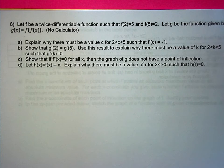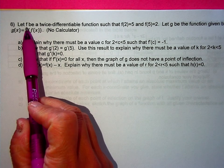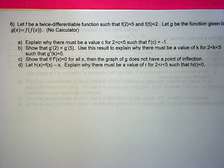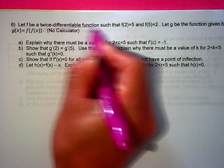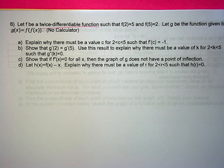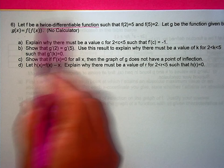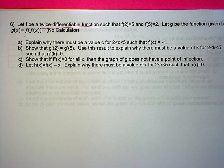Reading through the stem of the question: the function is twice differentiable. This means the second derivative exists, the first derivative exists, and because f is differentiable, f is also continuous. There are lots of things those words are telling you — second derivative, first derivative exist, and the function is continuous.